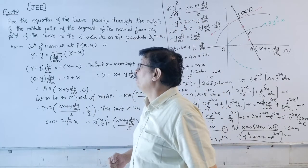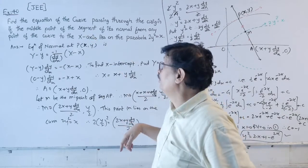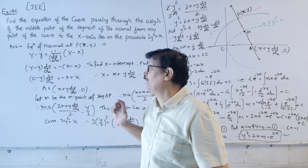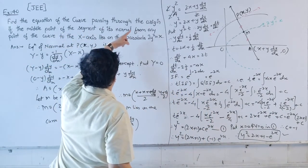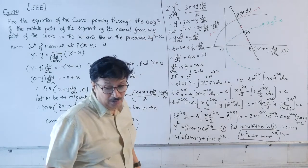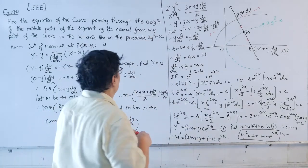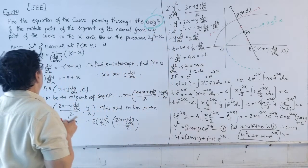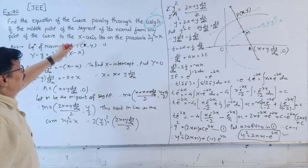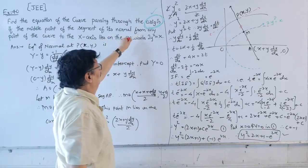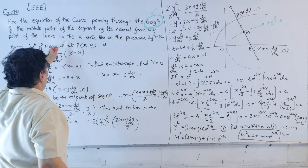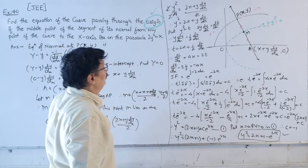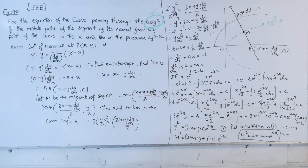Example 40: Find the equation of the curve passing through the origin, given that the midpoint of the segment of its normal from any point of the curve to the x-axis lies on the parabola 2y² = x.